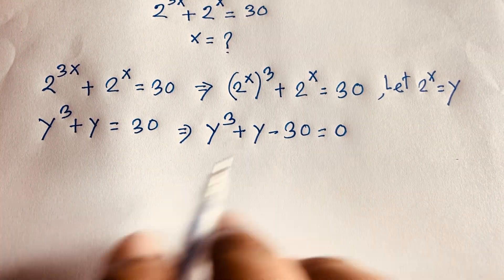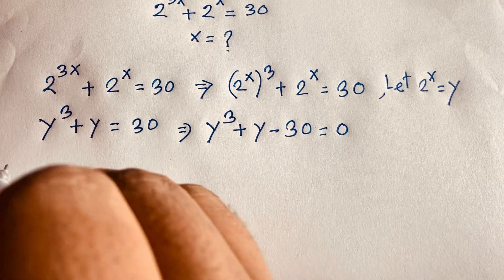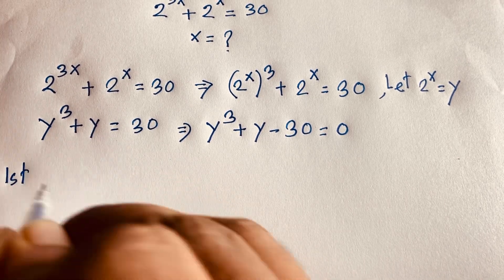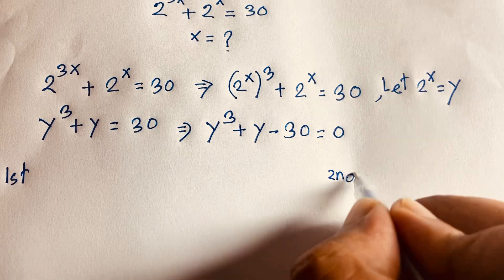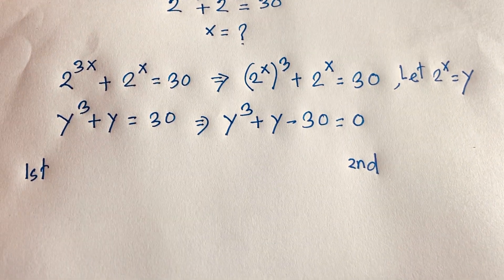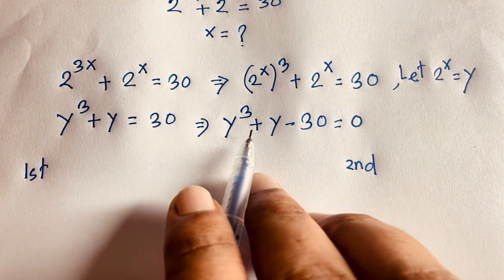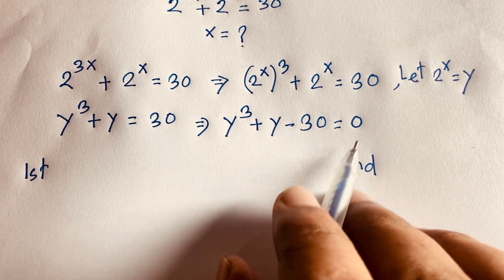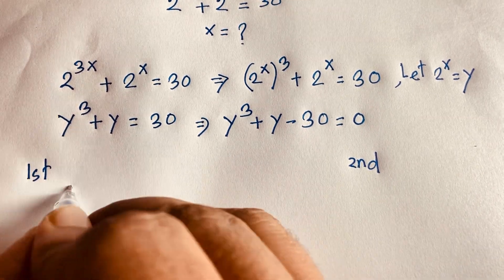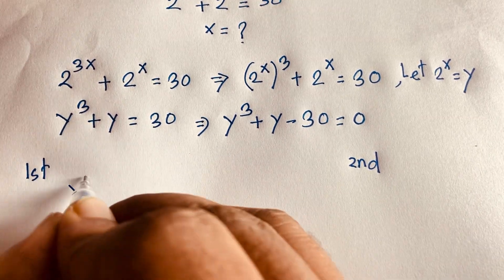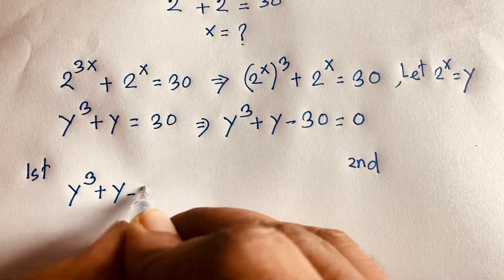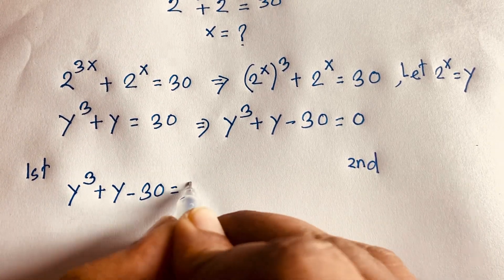I will solve this in two methods. Our equation is y³ + y − 30 = 0. First, we need to find one factor of this cubic.